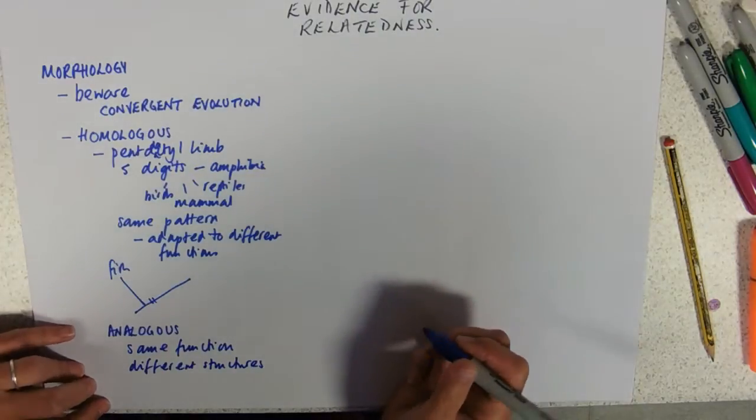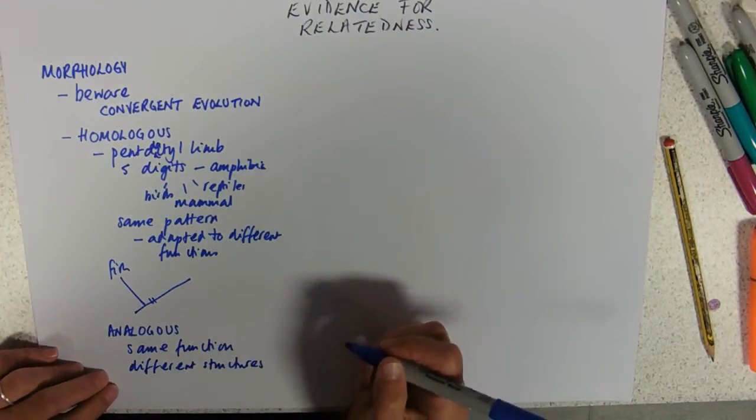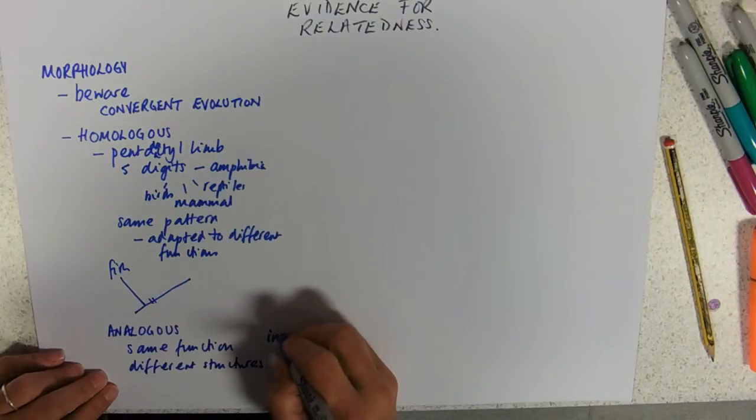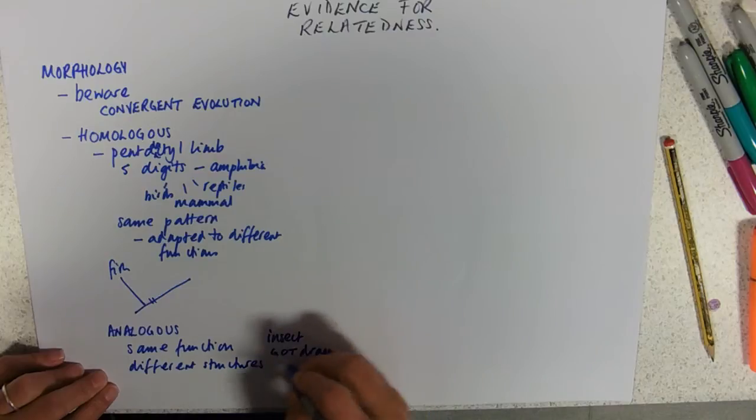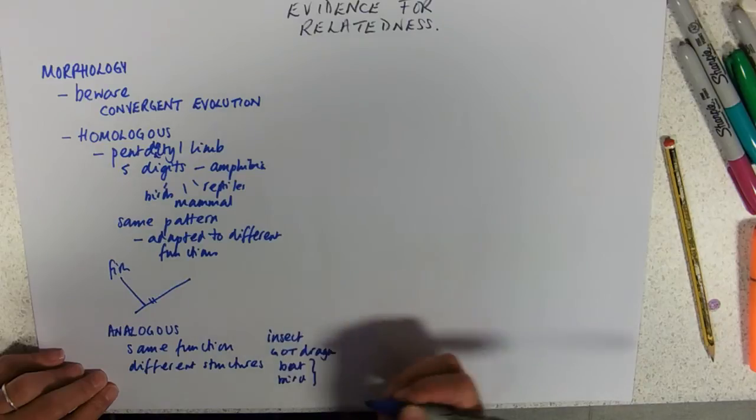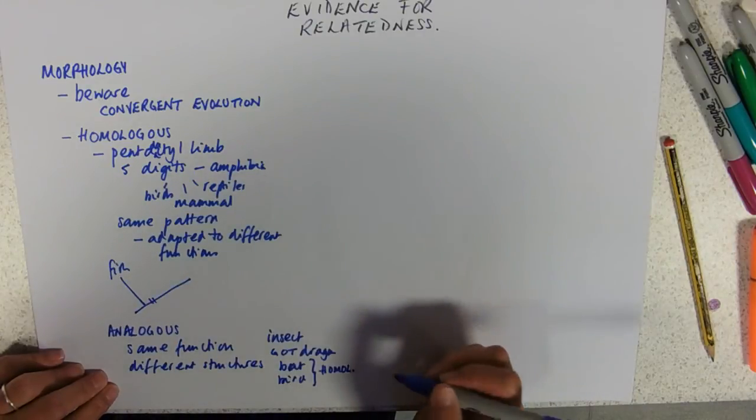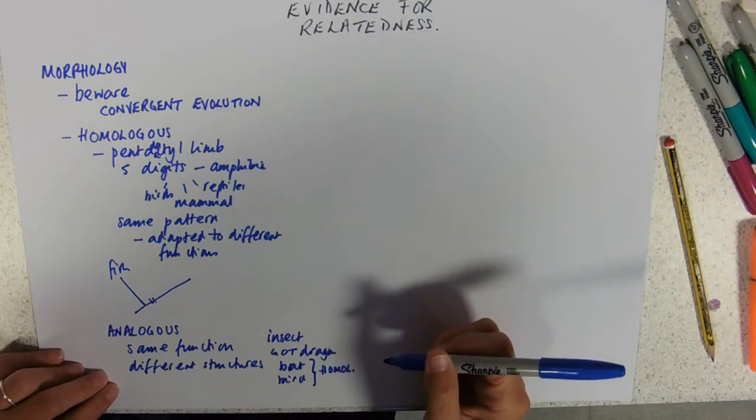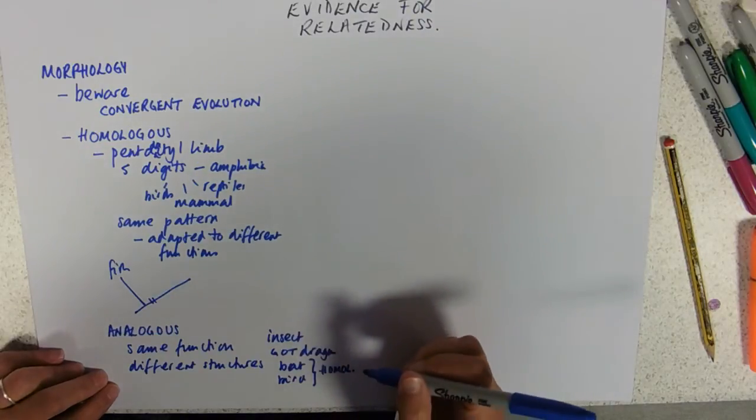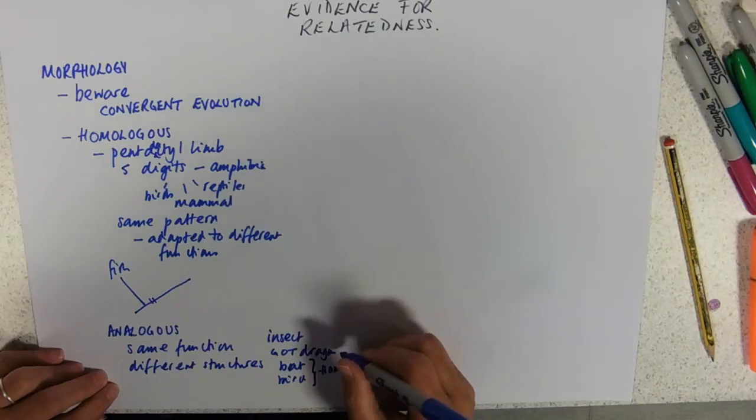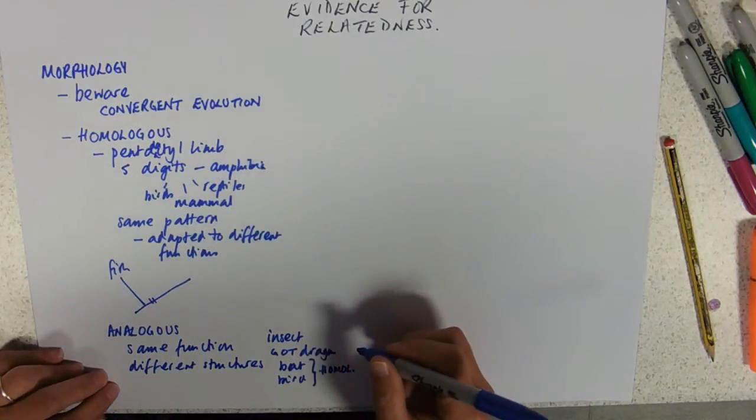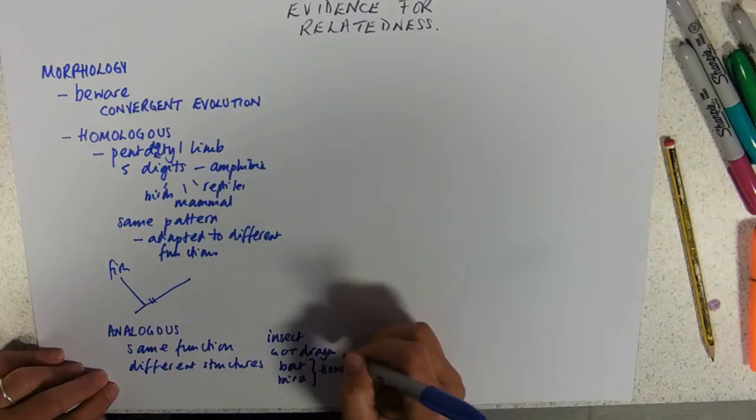So I hate to go Game of Thrones on you. But the wing of, say, an insect, a Game of Thrones dragon, a bat and a bird. In bats and birds, these are homologous structures. These are modifications of the pentadactyl limb. Game of Thrones dragon apparently has four limbs with pentadactyl limbs at the end, which is a bit weird, but it's also got two wings. It's got two extra bits of bone sticking out of it, supporting a wing.